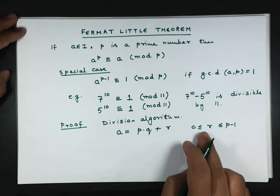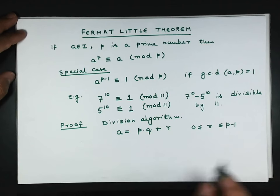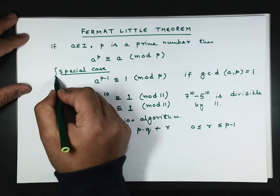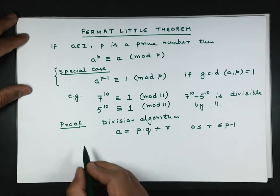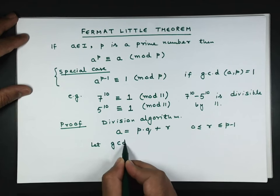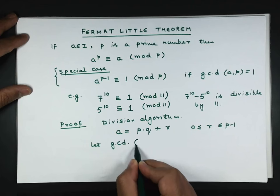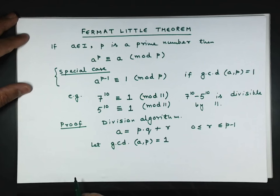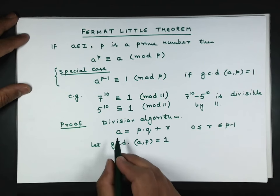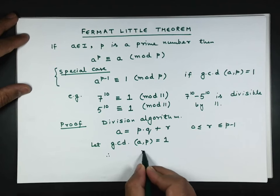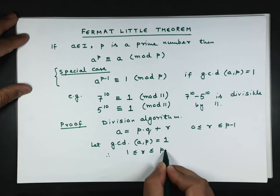If r is 0, then a is divisible by p. Now we will prove this special case. Let gcd(a,p) = 1, meaning they are co-prime. So a is not divisible by p, hence the remainder should lie between 1 to p-1.